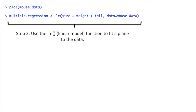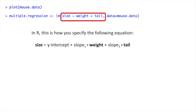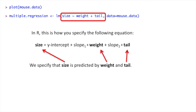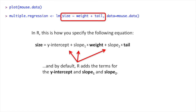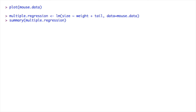Step 2: use the linear model function to fit a plane to the data. In R, using the tilde and the plus symbols, we specify that size is predicted by weight and tail. By default, R adds the terms for the y-intercept, slope 1, and slope 2. Once we've run the linear models function, we can print out a summary of the results using the summary function.